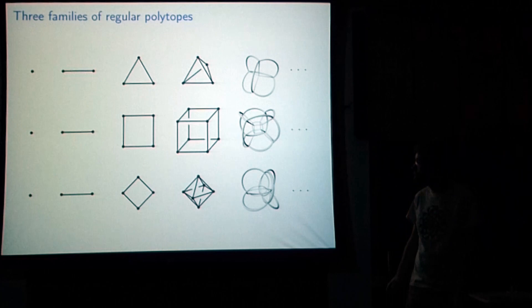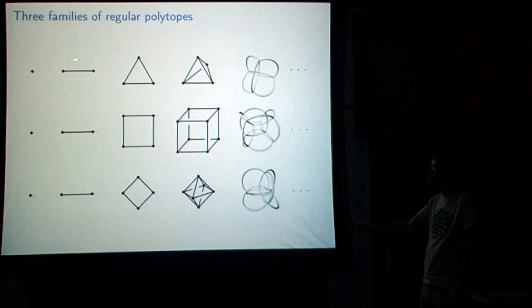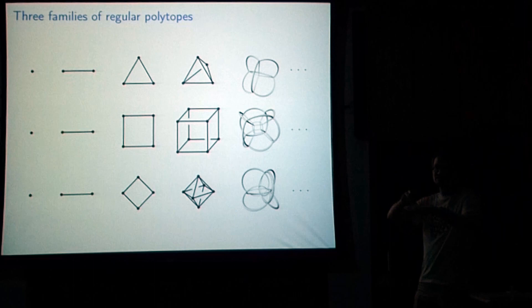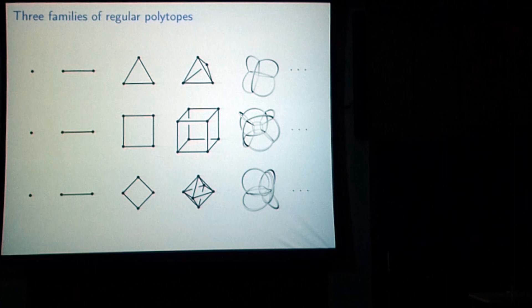Then there are two other infinite families. Starting with an edge, you move one point away from the line perpendicular and connect the lines to get a triangle. That triangle sits in a plane; take one point, move it away from that plane perpendicularly, join the lines, and you make a tetrahedron. After that you get the pentachoron — the four-dimensional version of the tetrahedron — and this sequence continues for any dimension you want.